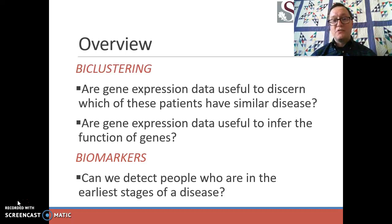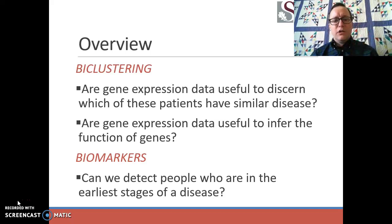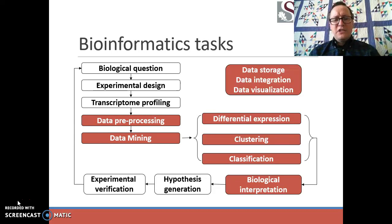Biomarkers are a fascinating topic, and there are a lot of ways that biomarkers can aid us in clinical situations. We're going to look at a brief glimpse of the methods we use for creating panels of biomarkers for particular clinical situations — for example, screening biomarkers for early detection: can we detect people in the earliest stages of a disease? As you can see in this diagram produced by my friend Bing Zhang, lots of different bioinformatics tasks come into play when making sense of gene expression data.